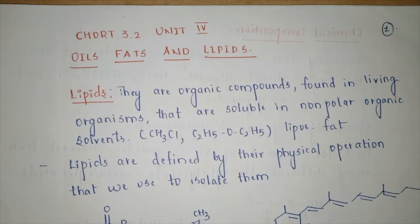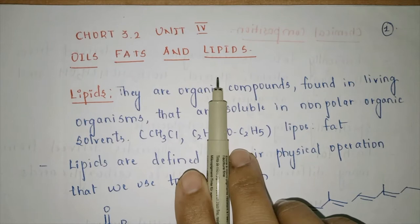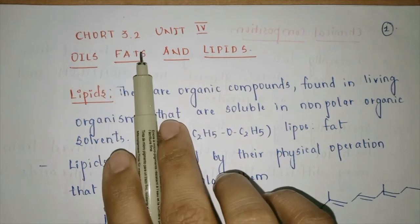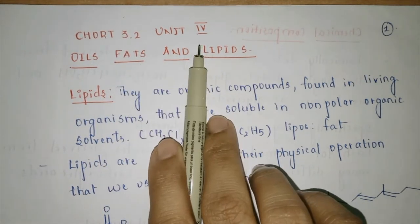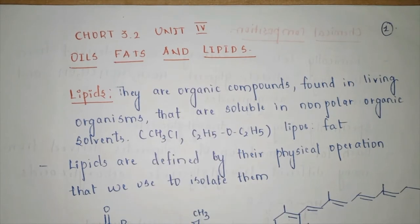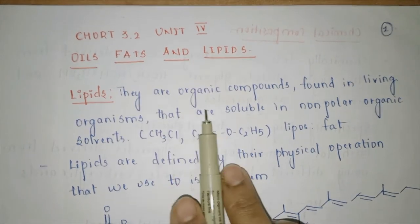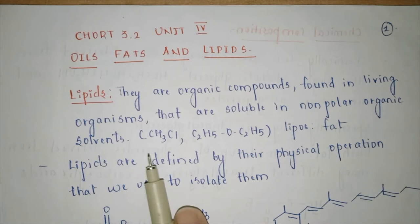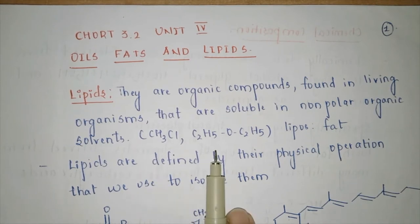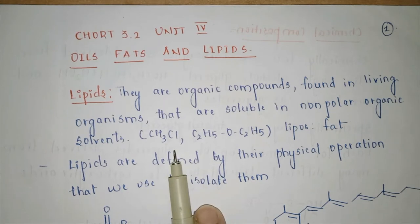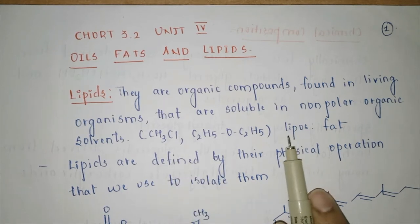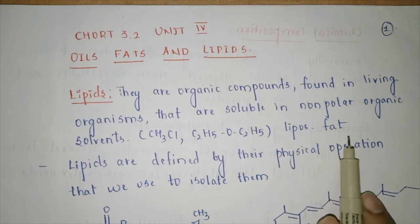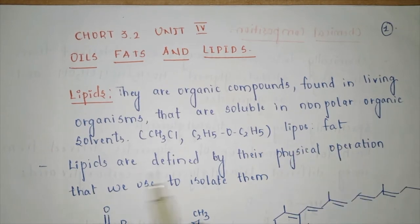The next unit starting is oils, fats, and lipids — this is part of chapter 3.2, unit 4 in paper number 2. Lipids are organic compounds found in living organisms that are soluble in non-polar organic solvents. These non-polar organic solvents can be diethyl ether, chloromethane, or DCM. The word lipids comes from 'lipos', meaning fat.